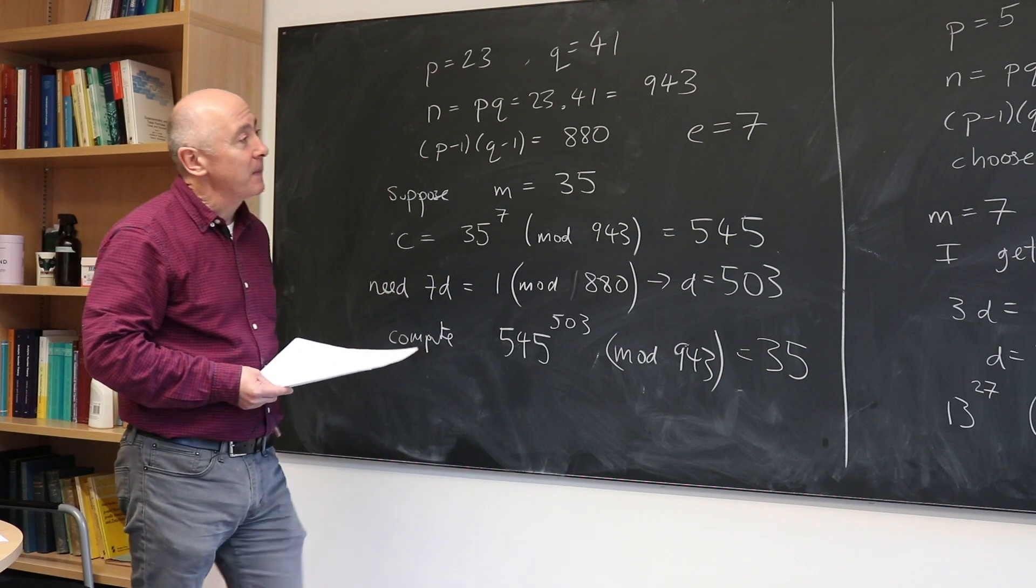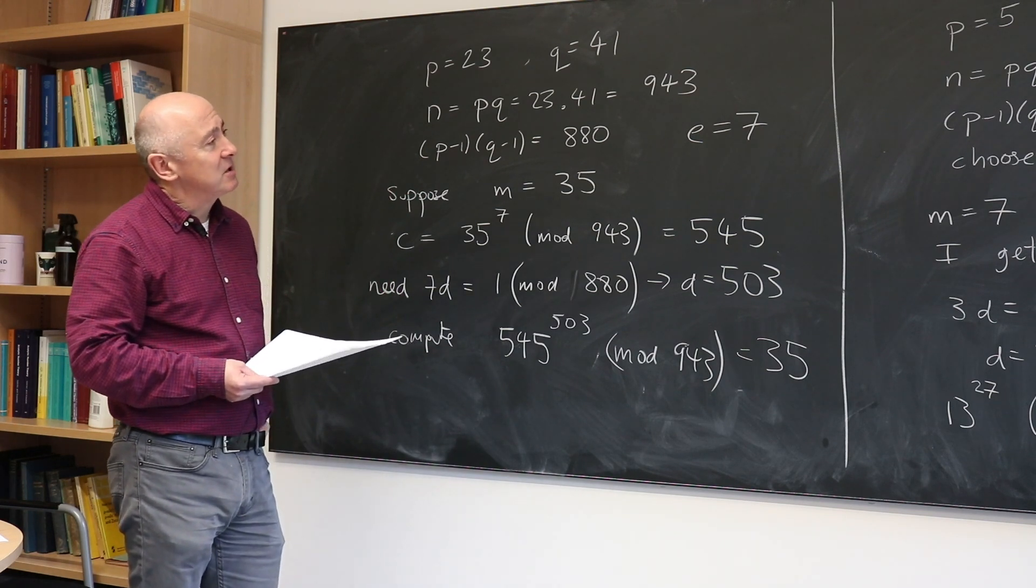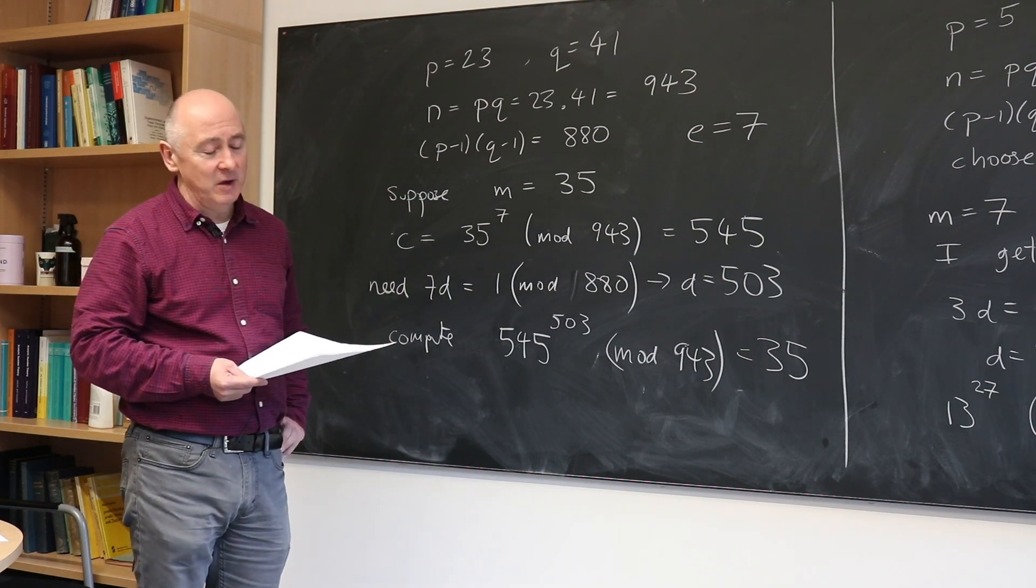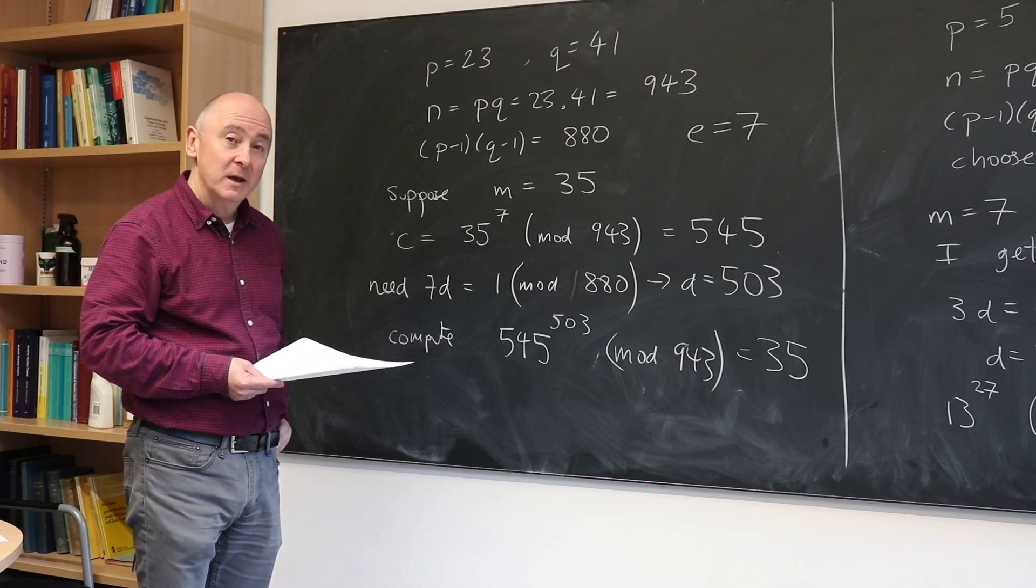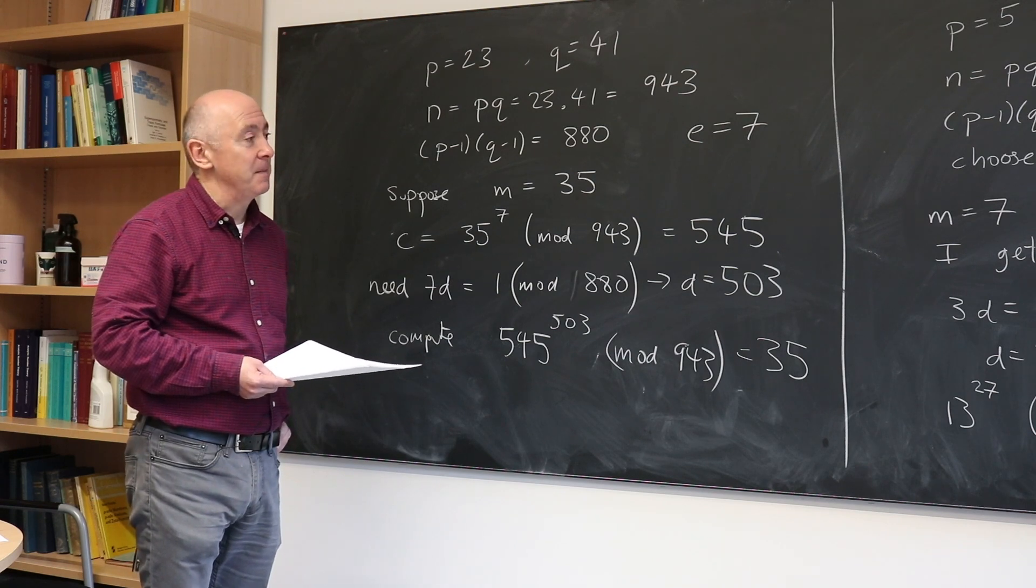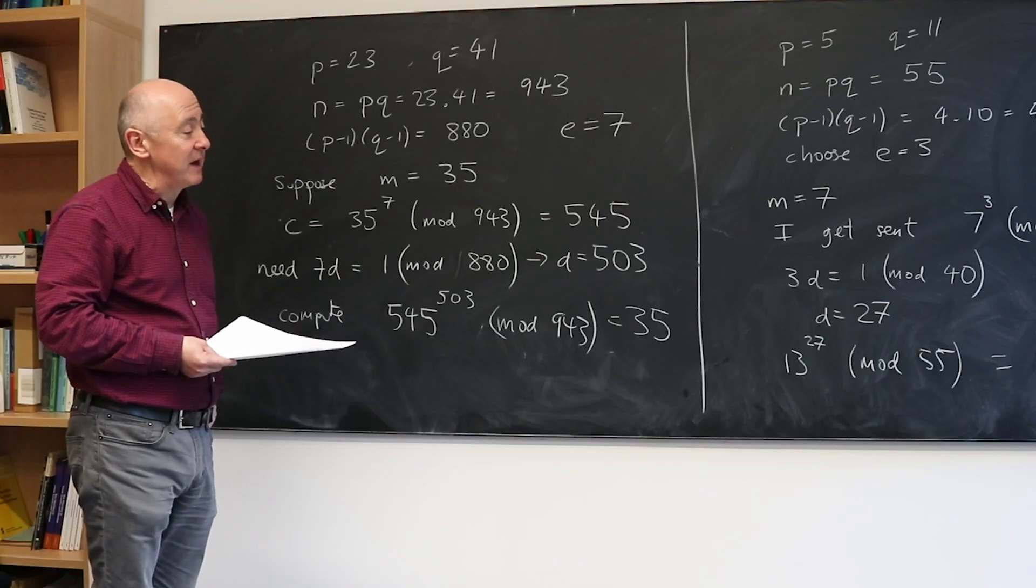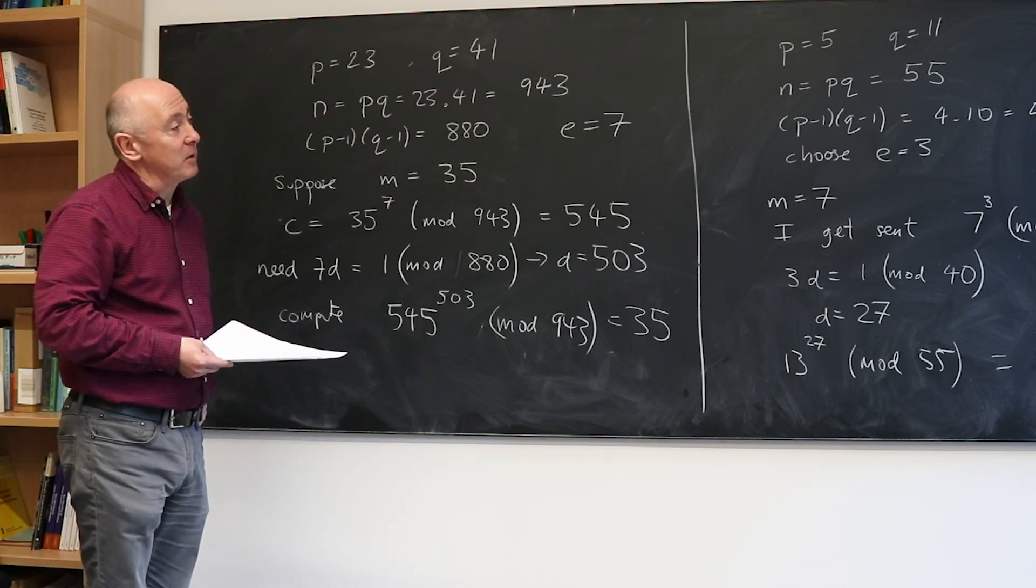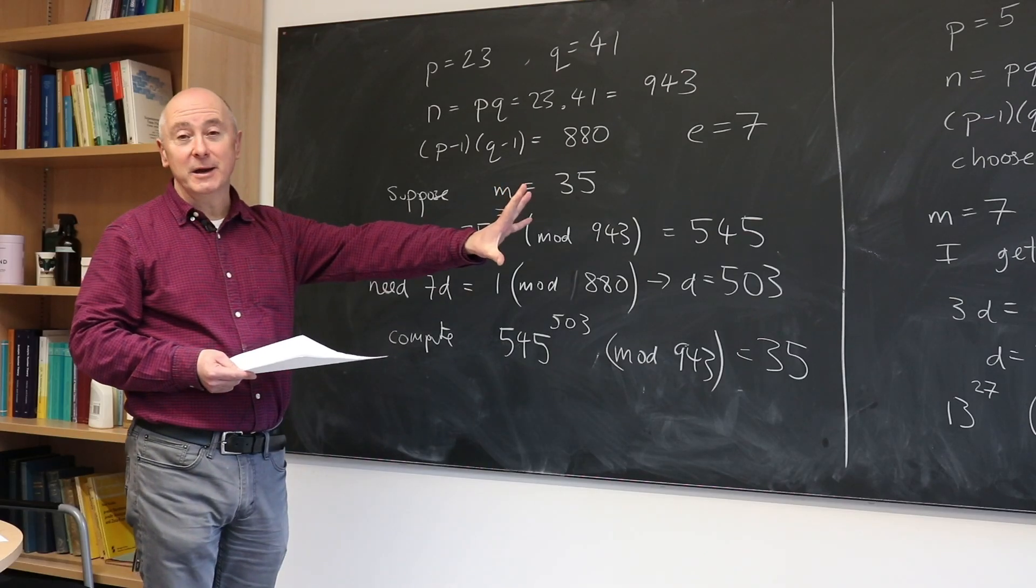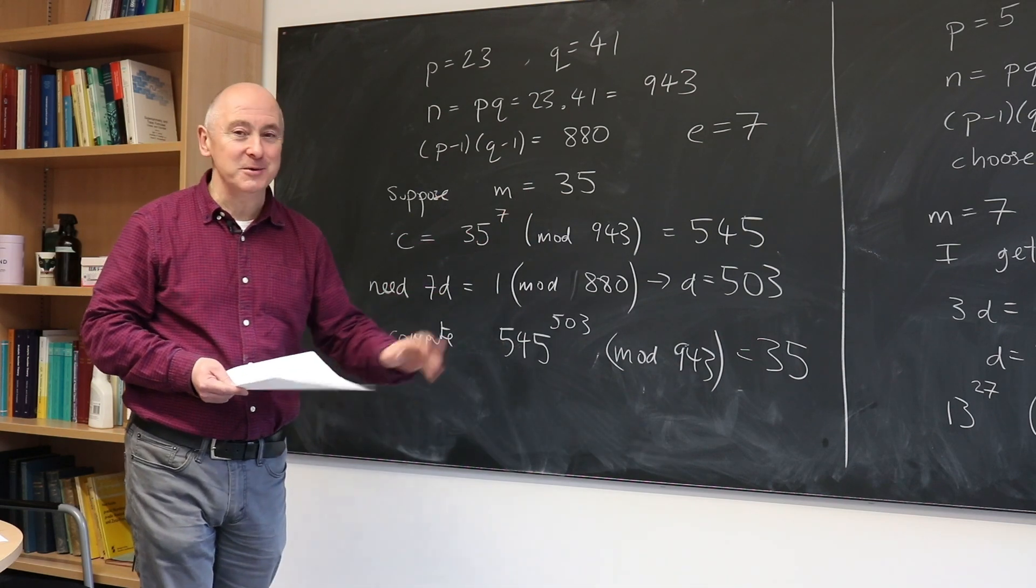Now, why does all this work? Well, it's related to a very beautiful piece of 17th century mathematics due to Fermat, called Fermat's Little Theorem, and a slight generalization of that to the Euler function, Euler's totient function. You'll find that all of this can be done in a very elementary way, but I won't do that today.